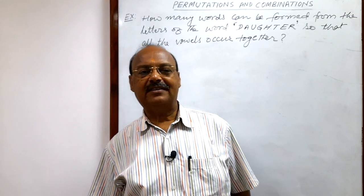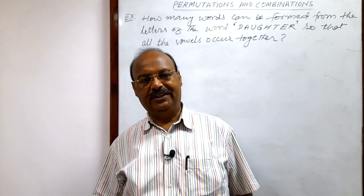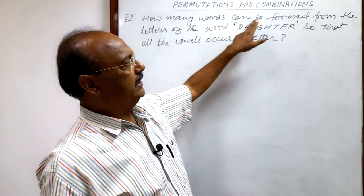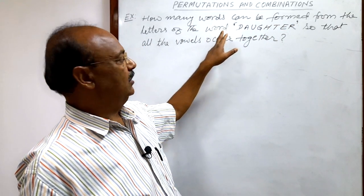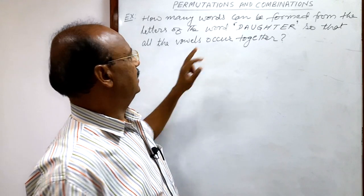Welcome students. Here we will see a very interesting and important question from the chapter permutation and combination. The question is: how many words can be formed from the letters of the word daughter, so that all the vowels occur together?